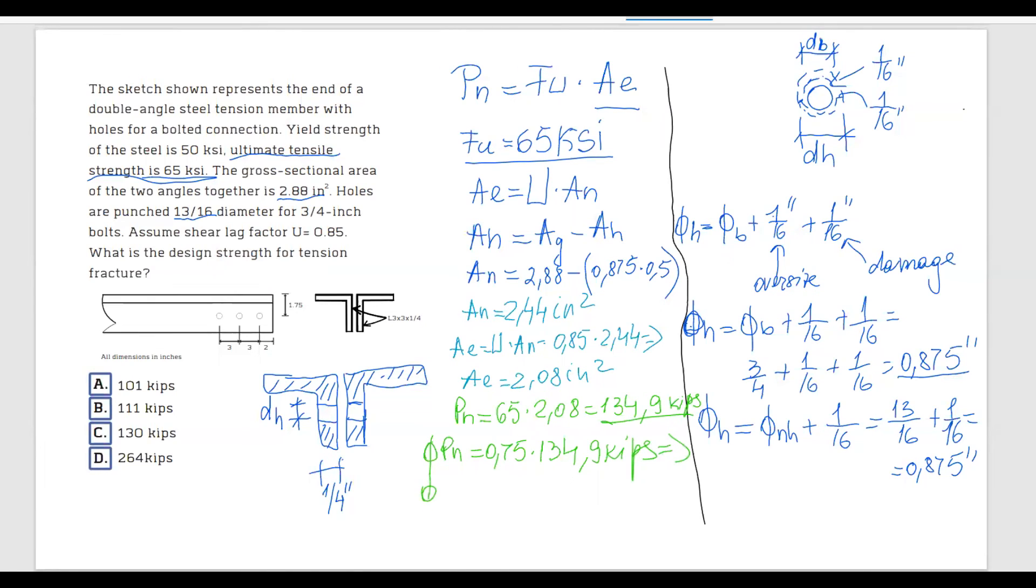So the design strength for rupture is going to be equal to phi PN equals 0.75 times 134.9 kips. And this gives me phi PN equals 101.2 kips. So be careful when you do these problems and be careful with this nomenclature design strength, nominal strength. If you are asked design strength, you have to multiply by the phi factor. And we get 101.2, so the correct answer is A.